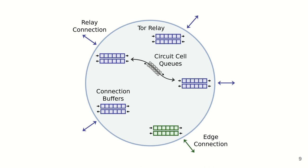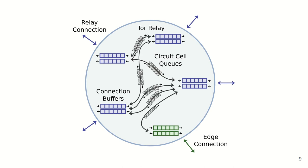Tor multiplexes multiple circuits over a single relay connection, and can have thousands of active circuits at a time. Relays must receive data on one connection, determine which circuit and possibly which stream within that circuit it belongs to, process it, and then send it out on another connection.